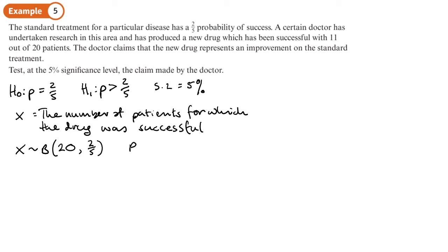And because we're looking for an improvement, an increase in the probability, we want to work out what's the probability that if there was nothing wrong with it, if the probability was exactly the same, what's the probability that 11 or more people would have been successful?